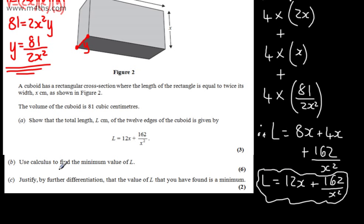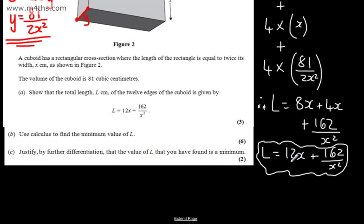In part B for 6 marks, we need to use calculus to find the minimum value of L. So what we're looking for here is dL dx. I'm just going to rewrite this. I'm going to write that L is equal to 12x plus 162x to the minus 2.